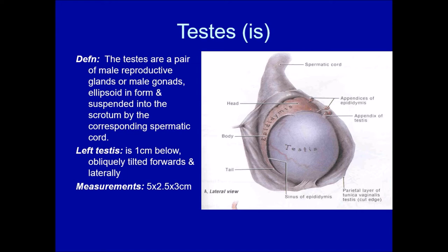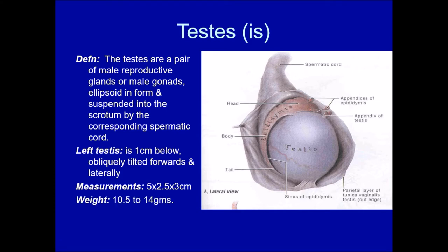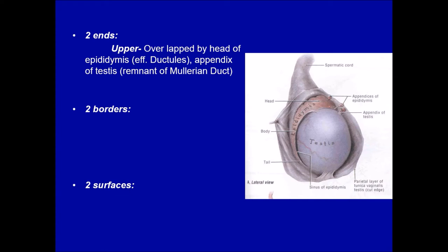The measurements of the testis: it is a small male gonad, almost 5 centimeters in length. The breadth and thickness are almost the same — 3 centimeters in breadth and 3 centimeters in thickness. The weight is almost 10 to 14 grams — a very small, light organ. Just like the ovary, it has two ends, two borders, and two surfaces.